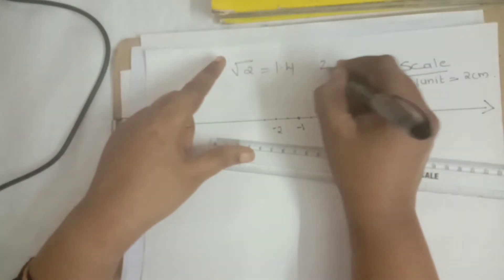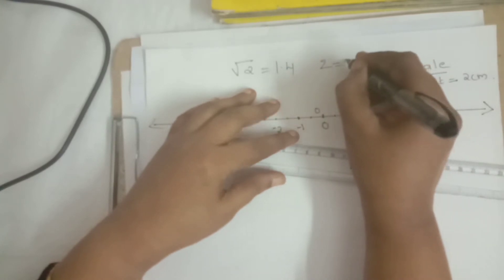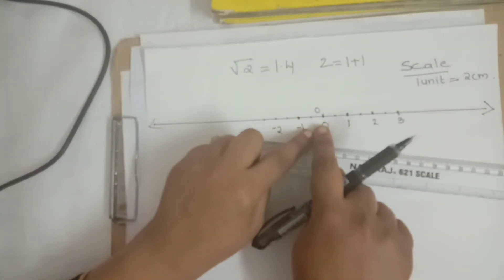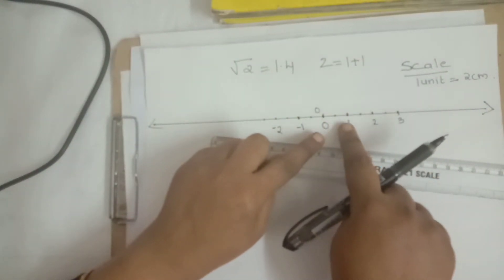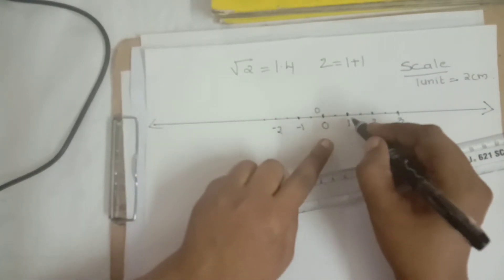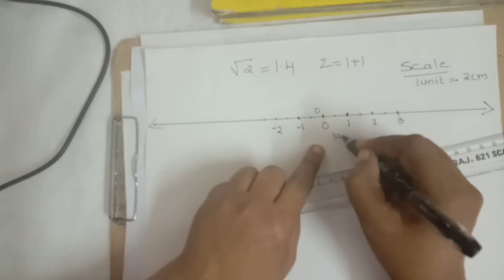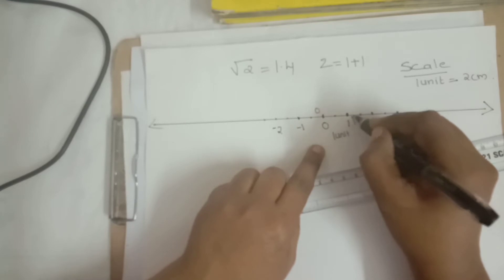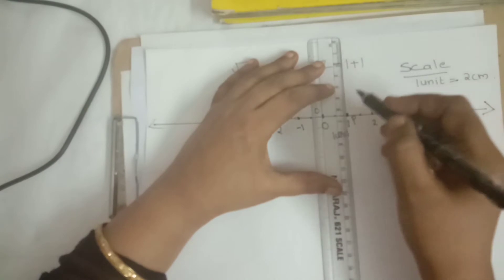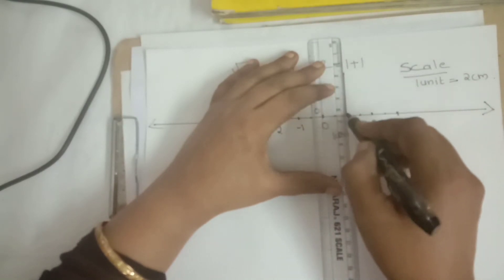We know √2 means 2, which we can express as 1 plus 1 equals 2. So from 0 to 1 unit take. That means 0 to 1 unit represents here. This 1 unit point, mark this distance as 1 unit. Mark an alphabet P. Then through P, draw a perpendicular. Draw a perpendicular means it represents 90 degrees.